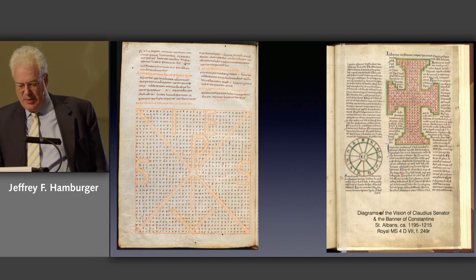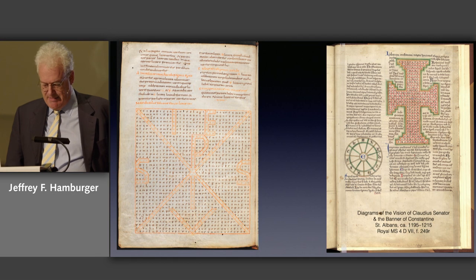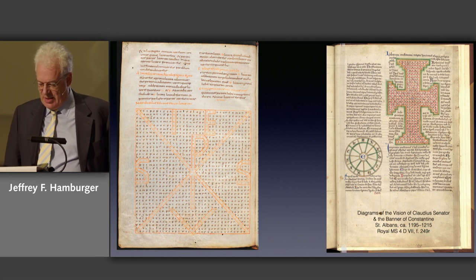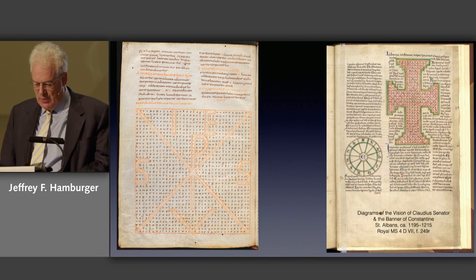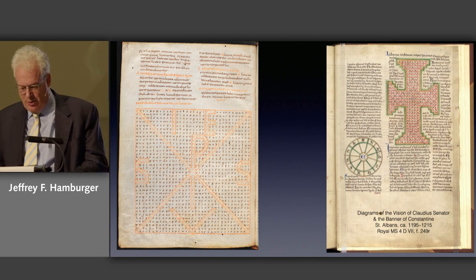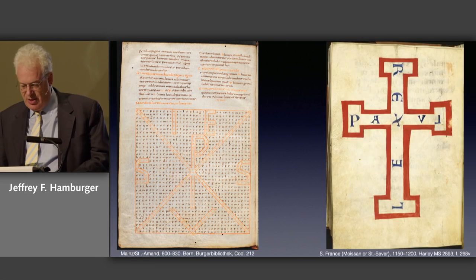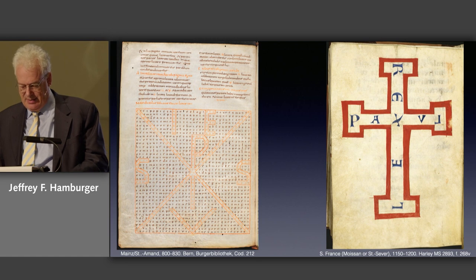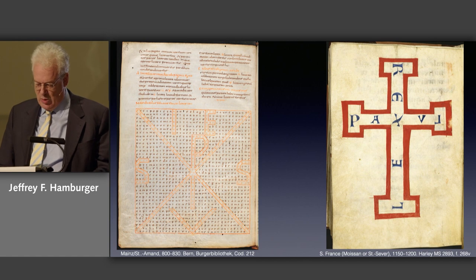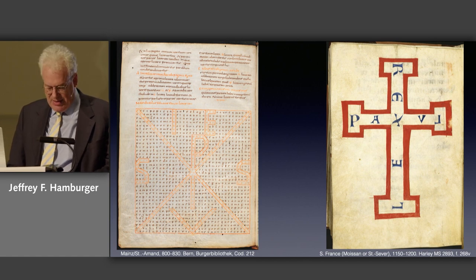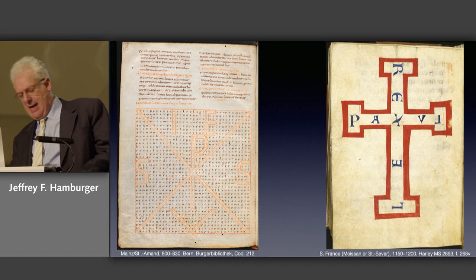Much admired throughout the Middle Ages, Optatian's picture poems spawned numerous imitations. Constantine's vision of the cross stands behind this picture poem and diagram appended to an early 13th century theological miscellany from St. Albans. The cross constituted the Christian diagram par excellence. It recurs in a 12th century gospel lectionary likely from the monastery of Moissac in southern France, inscribed Rex, Lux, Pax, and Lex — King, Light, Peace, and Law — which converge on the pregnant letter X at the center, itself an emblem of chiastic form.